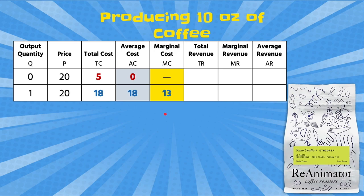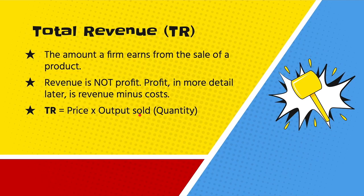Total revenue is the amount a firm earns from the sale of a product. An important note: revenue is not the same as profit. Total revenue is simply the price of a good times the number of goods sold — the output or quantity. So price times output equals total revenue.